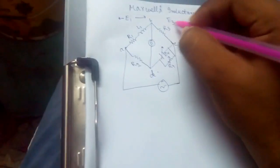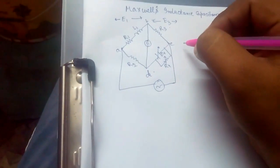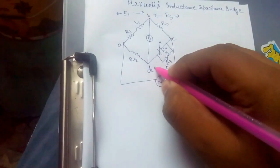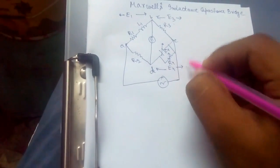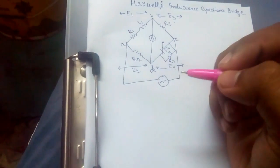E1 would be potential between AB, E3 would be potential between BC, E4 potential between DC, and E2 would be potential between AD.